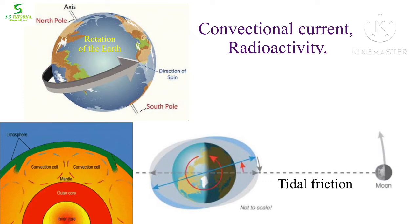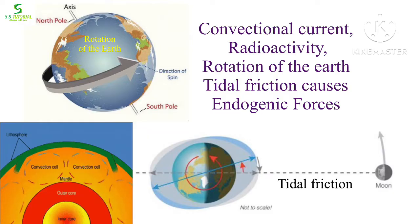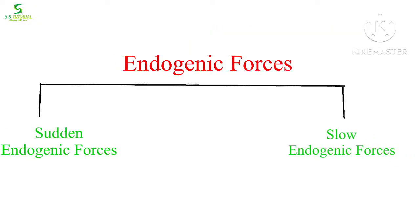Temperature and pressure differences among various layers of the earth's interior result in density differences, which cause convectional currents. These convectional currents are the main reason behind the origin of endogenic forces. Rotation of the earth, tidal friction, and radioactivity may also generate endogenic forces.